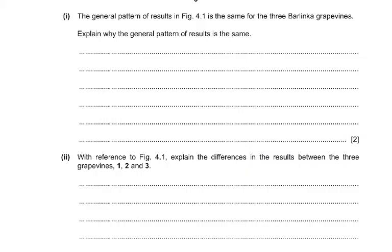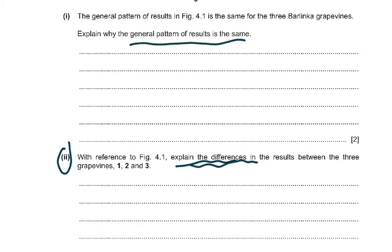Now, as we read part one of the question: the general pattern of results in figure 4.1 is the same for the three Barlinka grapevines. Explain why the general pattern of results is the same. Then for part two, with reference to figure 4.1, explain the differences in the results between the three grapevines 1, 2, and 3.